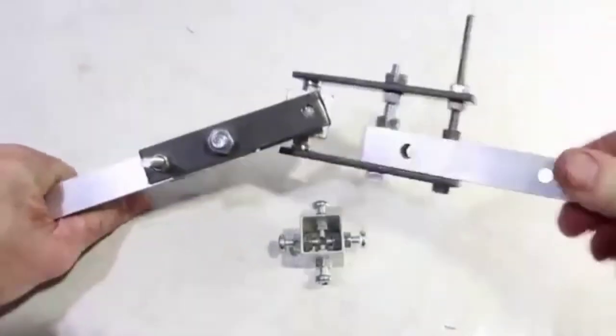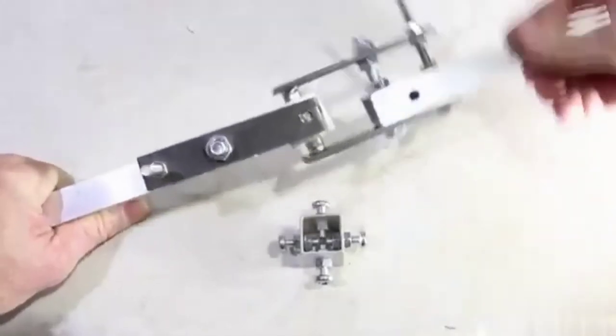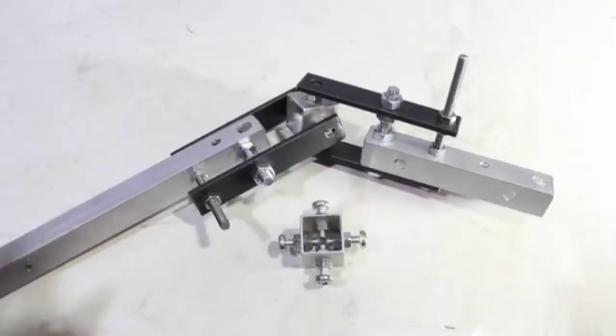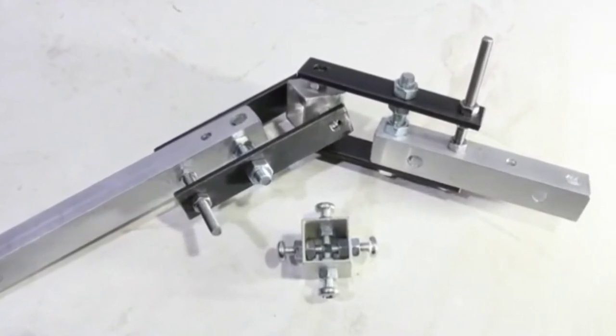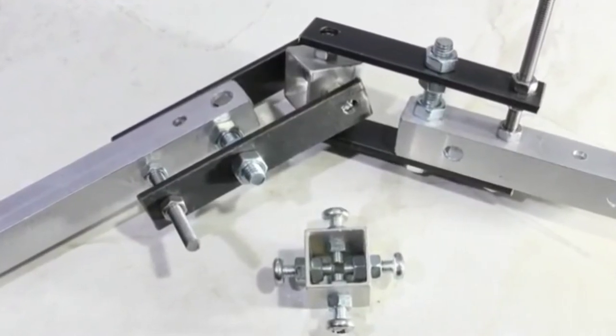If a universal joint is required that can rotate around two axes, this is also not a problem. The center part consists of 4 screws attached to a small piece of square tube. Both axes are adjustable. The universal joint is sturdy and has very little backlash.